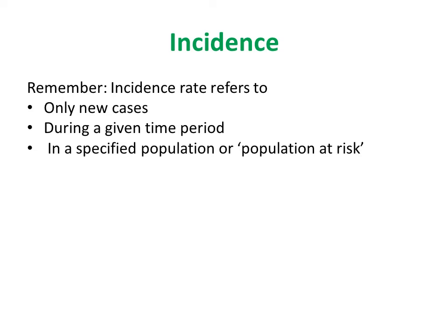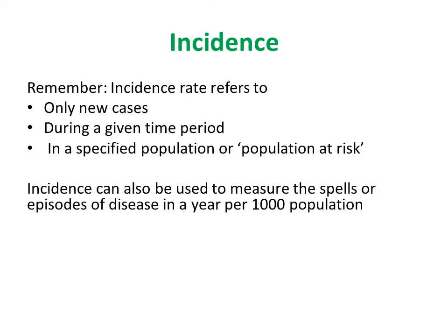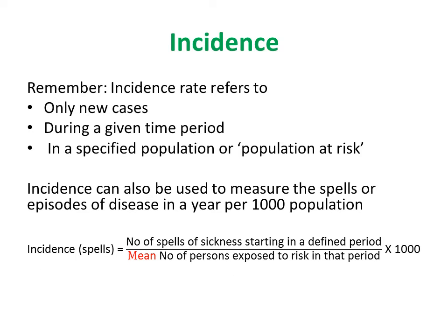Incidence can also be used to measure the spells or episodes of disease per year per thousand population. This is because some diseases may have more than one episode in one person in one year — for example, sore throat and diarrhea. It is therefore important to know the number of spells rather than just the number of people who have the disease. The formula is: number of spells of sickness starting within the defined period, divided by the mean number of people exposed to risk in that period, multiplied by 1000.